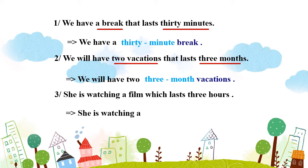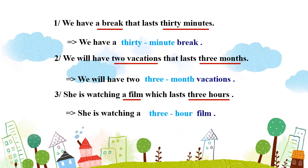Câu số 3: "She is watching a film that lasts 3 hours." – Cô ấy đang xem một bộ phim mà kéo dài 3 tiếng. Ở đây nói về a film, thời gian là 3 hours. Vậy chúng ta sẽ viết lại: "She is watching a 3-hour film." – Cô ấy đang xem một bộ phim 3 tiếng.